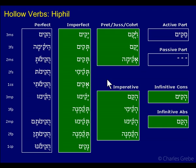What about the imperfect, or the prefix forms? The first thing we see is that we have the qamets. That's just like what we had in the Qal. Remember, qamets marks the hollow verbs — also geminates, we'll see it there — but when you see qamets, think hollow verbs. In the Nifal we didn't have the qamets here. In the Hiphil, we're back to having a qamets as a prefix vowel, just like the Qal.